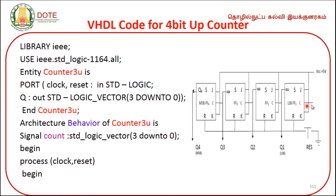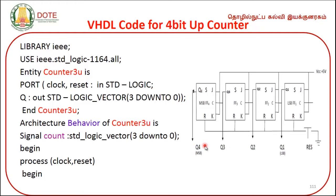The first flip-flop gets the main clock input. The Q output of the first flip-flop becomes the clock input for the second flip-flop. The output of the second flip-flop is the clock input for the third flip-flop, and the third flip-flop's output is connected to the fourth flip-flop's clock input. All four JK flip-flops start from VCC, which is 5 volts. The outputs are Q1, Q2, Q3, Q4, and that is the up counter diagram.